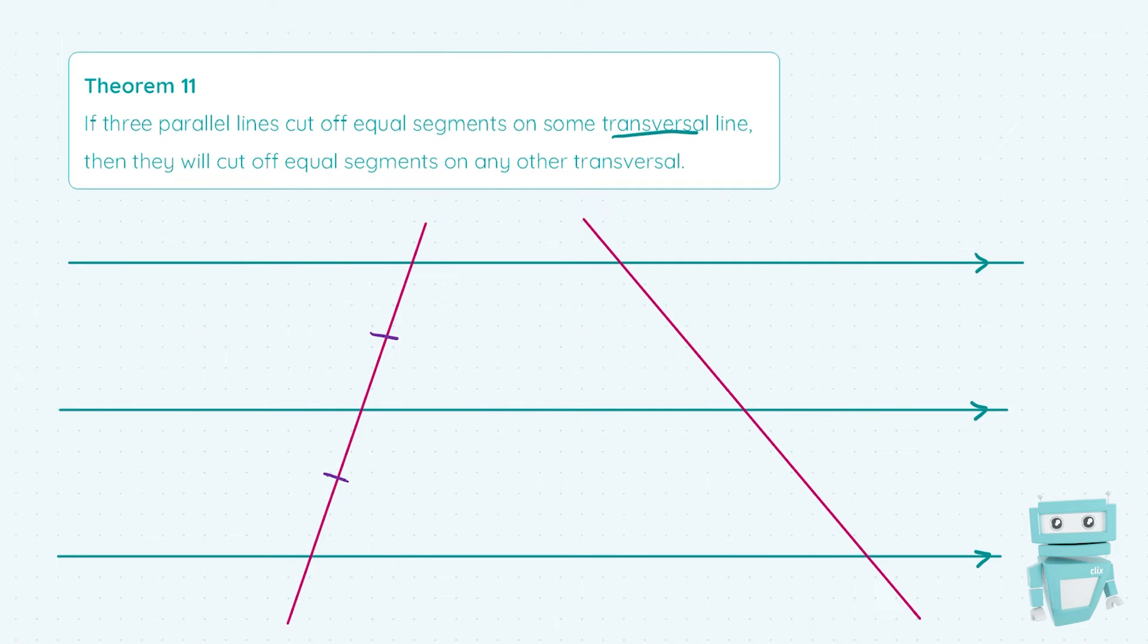It's just a complicated way of saying, for our example, that these pink lines cross the parallel lines, and they cross more than one line, therefore they're transversal.